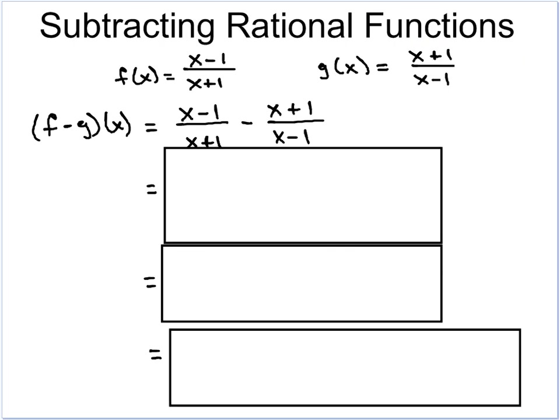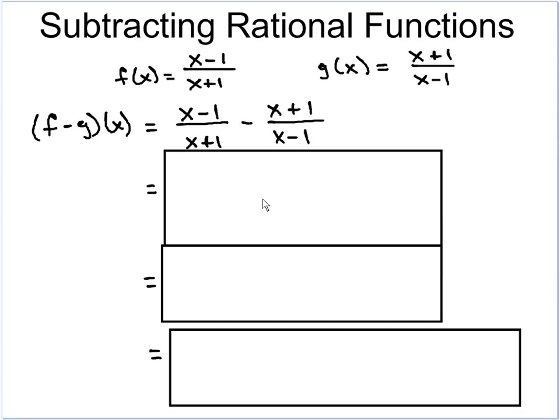Now let's look at subtraction. Subtraction is actually the exact same process as addition — we just perform a different operation on the numerator. If the denominators are the same, we subtract the tops while the bottoms stay the same. If the denominators are different, like the example we'll do here, we get the same denominator first, and then subtract the tops instead of adding them. We have f(x) = (x - 1)/(x + 1) and g(x) = (x + 1)/(x - 1).